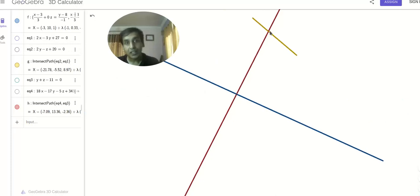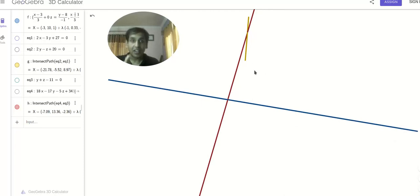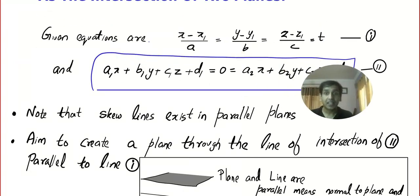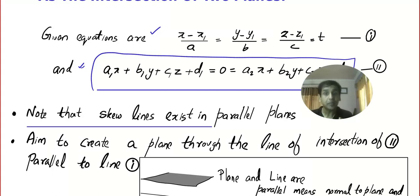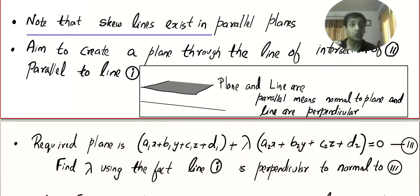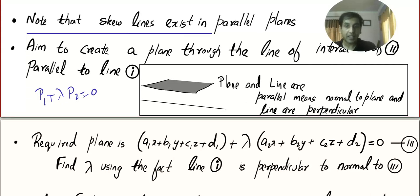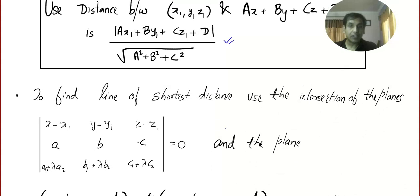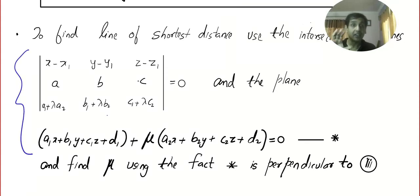The shortest distance will be perpendicular to the two other lines. Now let us go for the method. We go for a systematic method. One equation is in symmetric form, one is the intersection of two planes. If you want to understand the logic, you can go through the logic, but in exam time it's better to go through the working rule. You have to understand the skew lines exist in parallel planes. So we are going to create a plane through the line of intersection of the second one using the formula P1 plus lambda P2 equal to 0, then we will find the distance between them — that will be the shortest distance. Finally, we will use another technique and find the line of shortest distance.